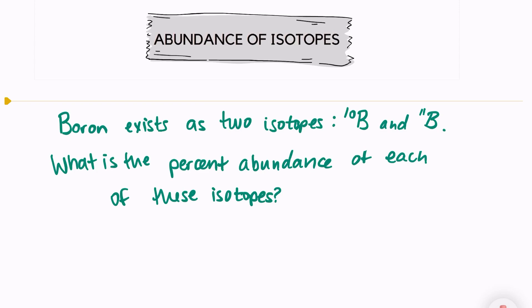Let's read this question. It says boron exists as two isotopes, boron-10 and boron-11. What is the percent abundance of each of these isotopes?